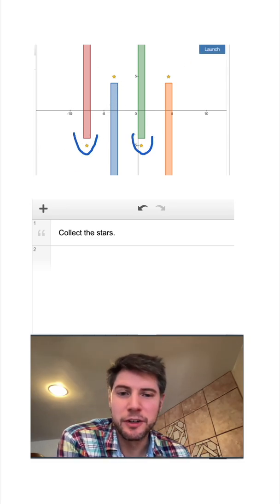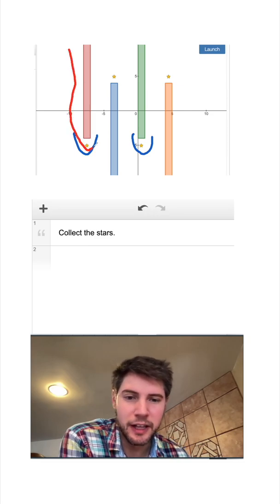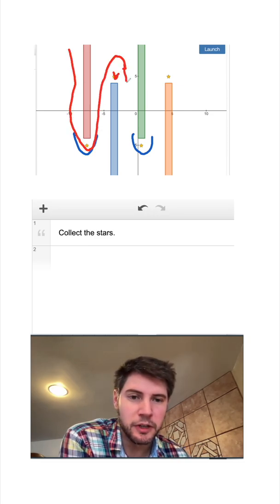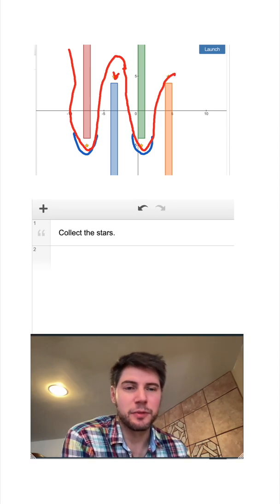So the best move might be to do a half circle here and a half circle here. They'll come down, get into that half circle, shoot up, hit this one, and then go down here and shoot up and hit this one. So let's give it a shot.